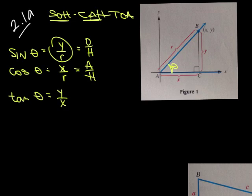R is going to be our hypotenuse. We're going to start calling that H for hypotenuse. So it's R and H.